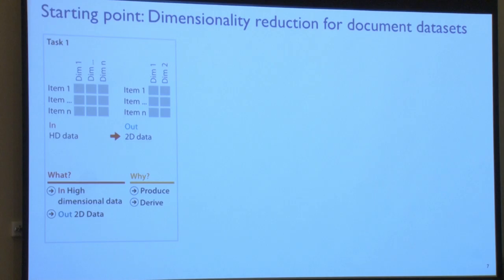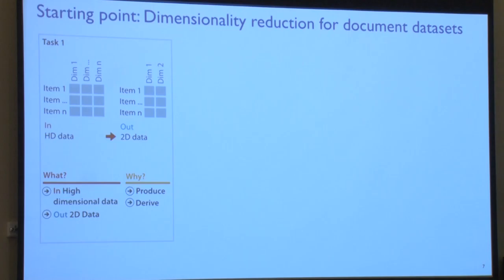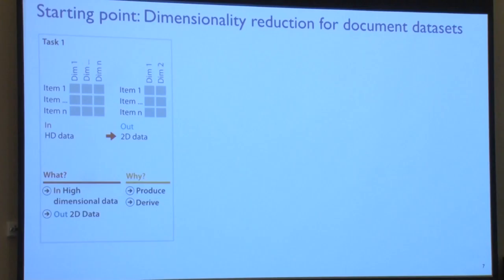For those not familiar with dimensionality reduction — I'll call that DR for short — the idea is we have a bag of words model: a lot of documents as rows in a very large table, with columns being every word that appears in any document. It's a very large and very sparse table. Rather than looking at this table, which would be mind-numbingly boring, we want to derive a new space — to project from this very high dimensional space down to something we can actually think about, typically two dimensions.